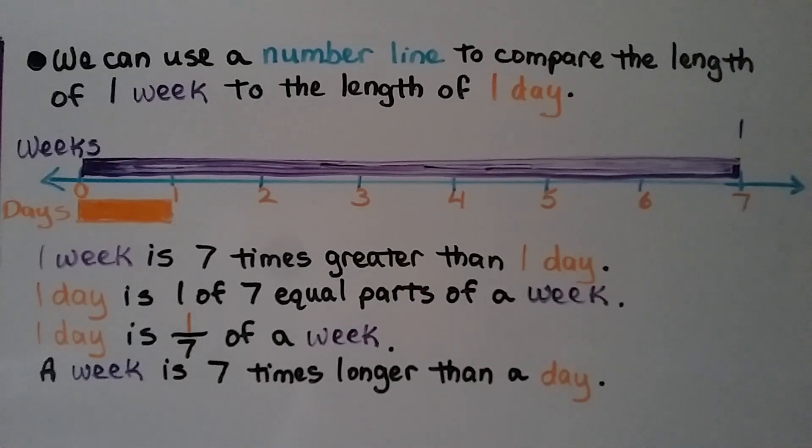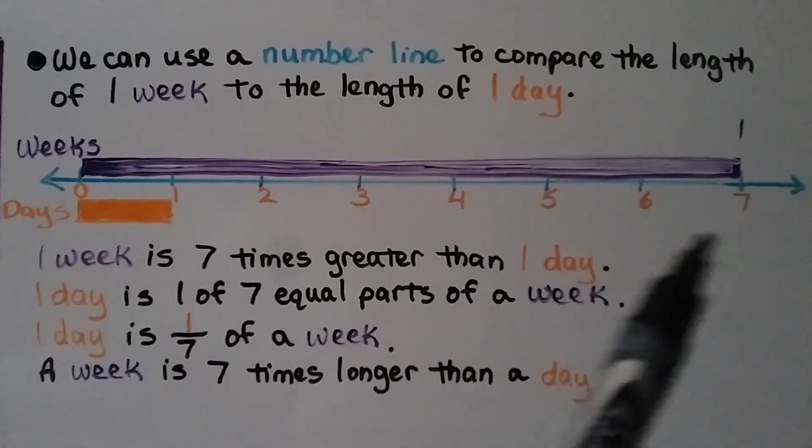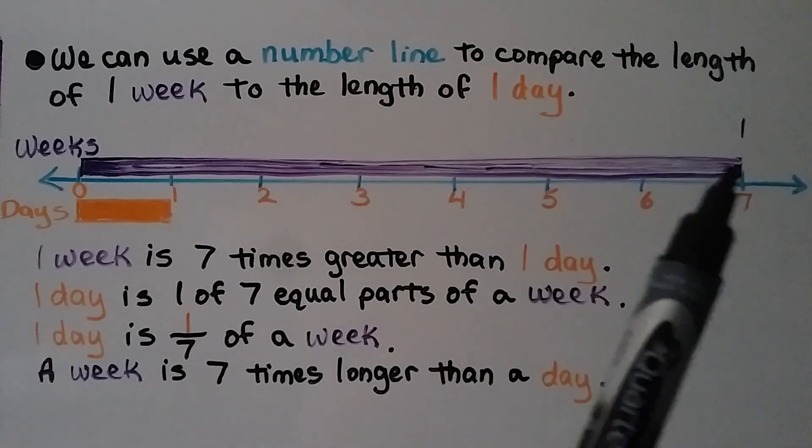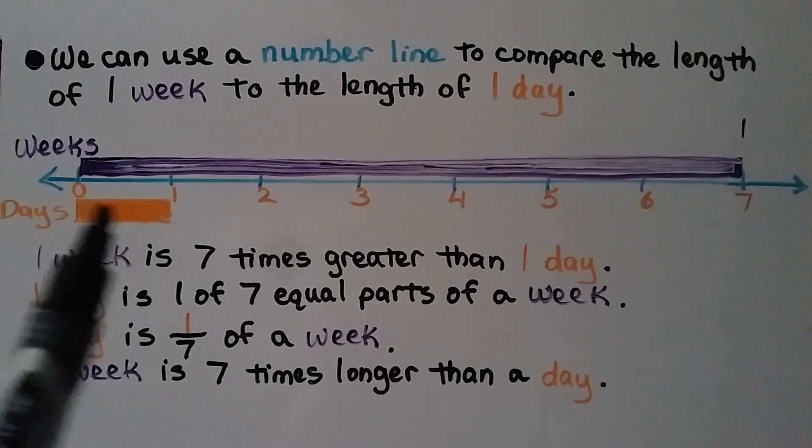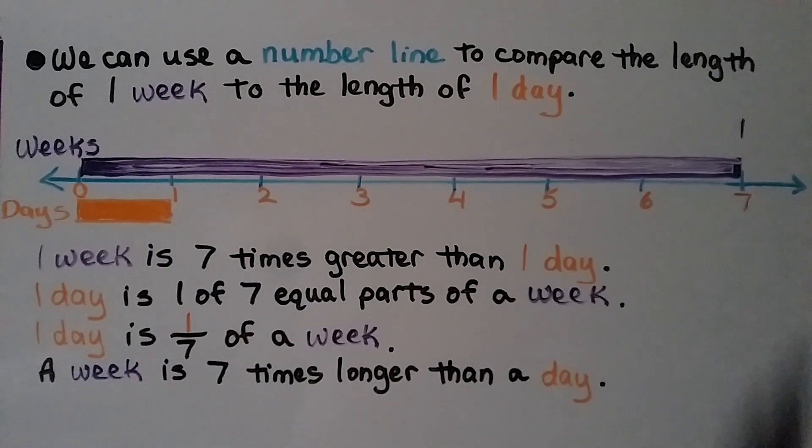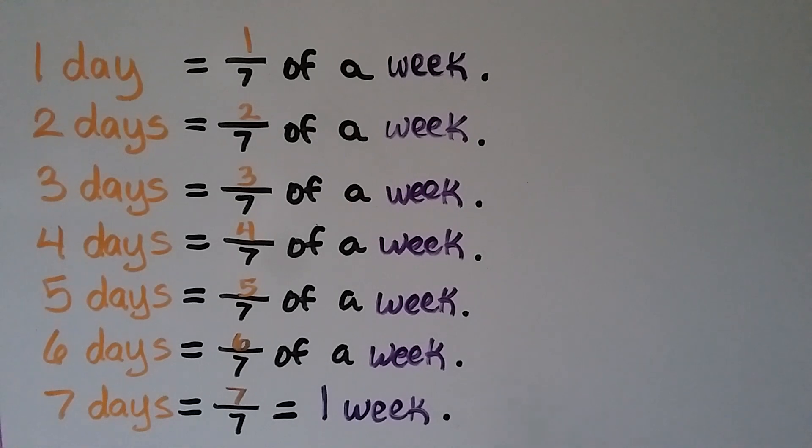We can use a number line to compare the length of 1 week to the length of 1 day. We have a number line going from 0 to 7. There are 7 days in 1 week. Here is 1 day and here is 1 week. 1 week is 7 times greater than 1 day. 1 day is 1 of 7 equal parts of a week. So 1 day is 1/7th of a week.